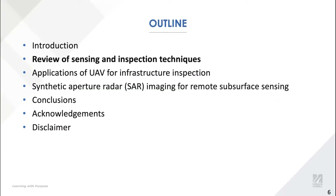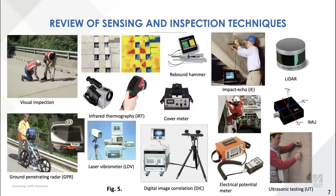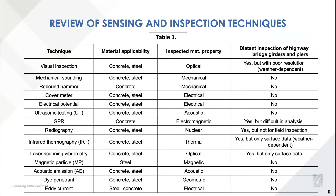So what are the existing sensing and inspection techniques? Shown here is a selection of existing sensing and inspection techniques. Some are remote and others are contact. They are differentiated by interrogating different material properties in principle. Table 1 summarizes the different material properties corresponding to different inspection techniques.